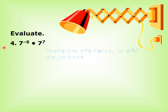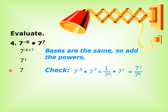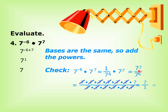Evaluate 7 power negative 6 times 7 power 7. The bases are the same, so we can add the powers: 7 power (negative 6 plus 7) equals 7 power 1, equals 7. We can check: 7 power negative 6 times 7 power 7 equals 1 over 7 power 6 times 7 power 7, giving 7 power 7 over 7 power 6. Cancelling gives 7 over 1, equals 7.